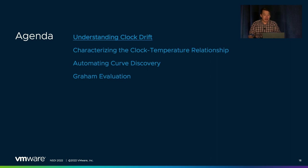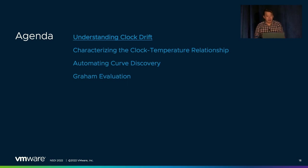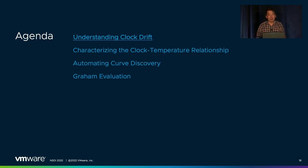Now that I've introduced why clocks are important for distributed systems and how Graham tries to improve them by correcting for temperature errors, I'm going to tell you next about how we came to understand clock drift. With that understanding, we characterize the relationship between temperature and the clock and automate the discovery of the curves in that relationship. Finally, I'll show some evaluations that demonstrate Graham's effectiveness.